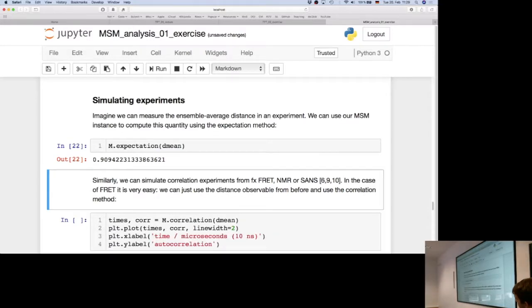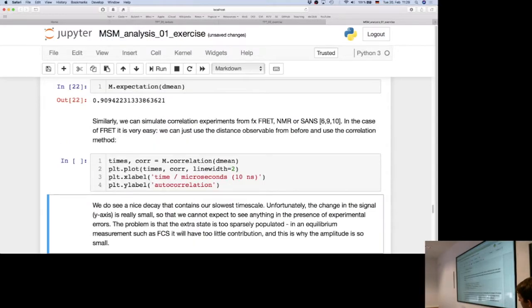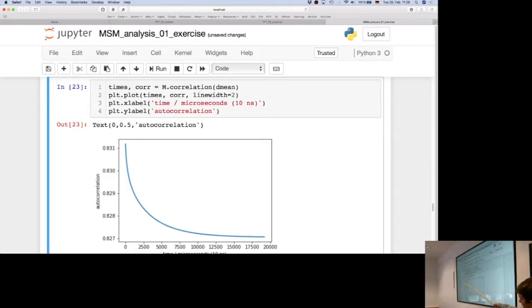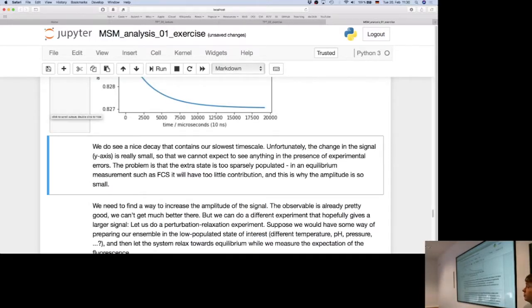The next thing we can do is compare to these correlation experiments, for instance, from FRET, NMR, or small angle neutron scattering. For FRET it's easy, you can basically just compute the correlation function of your observable, which you can do by just calling the correlation function with your observable evaluated in each of your cluster centers. And then you get back the time correlation function of your observable. So, and this you can then transform into a number of different spectroscopic observables. For instance, in FRET, you can directly compare it to what you measure in the experiments.